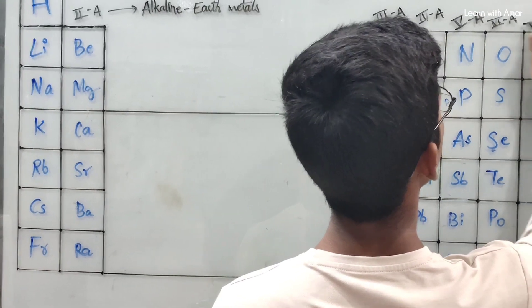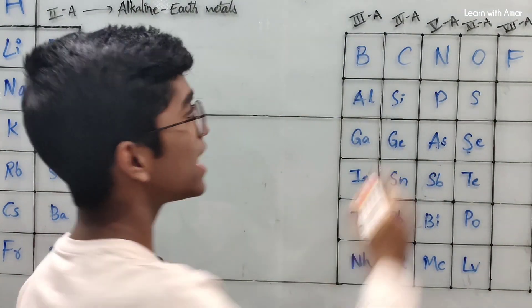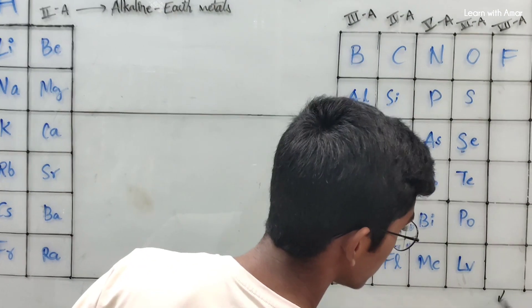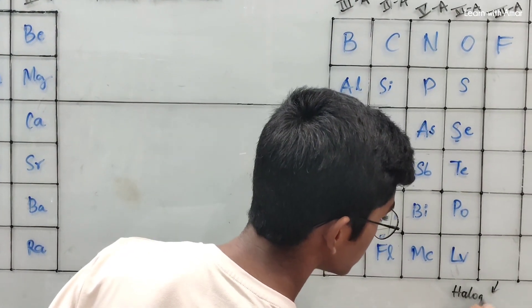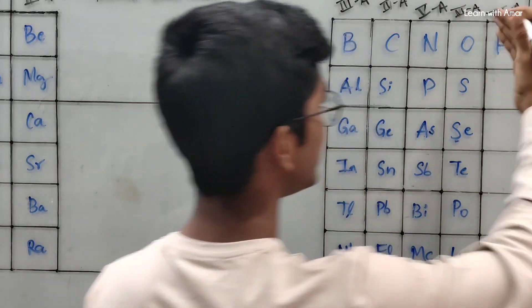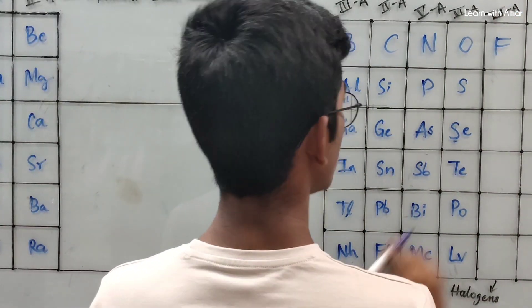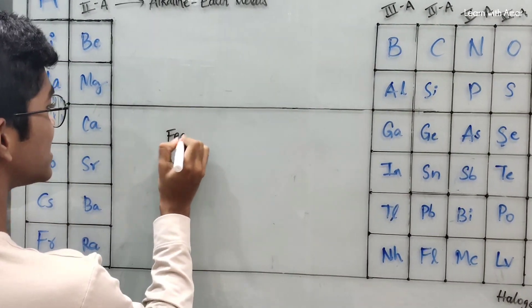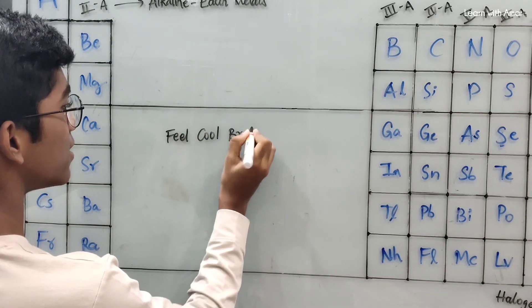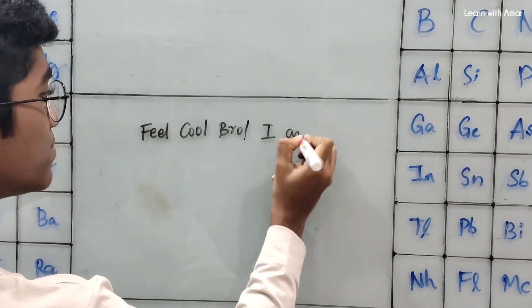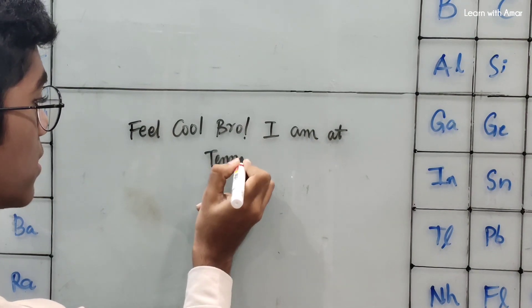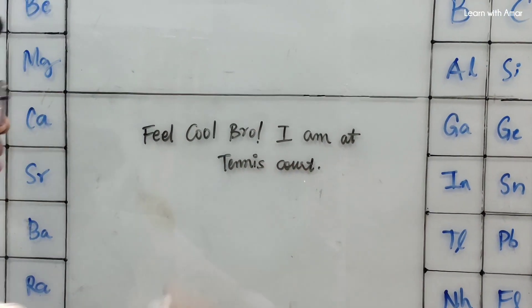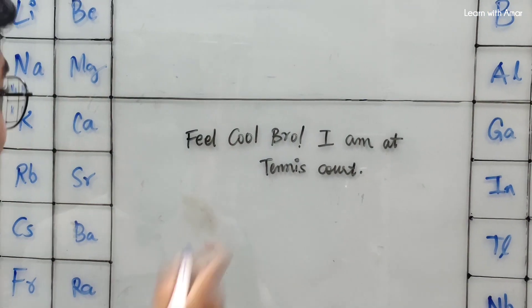Moving on to the 7A group — these are known as the halogens, which means they are the salt-producing family. Starting with Fluorine, we have a sentence: 'Feel cool bro, I am a tennis court.' Feel for Fluorine, Cool for Chlorine, Bro for Bromine, I for Iodine, Tennis for Tennessine, Court for... completing the halogen family.